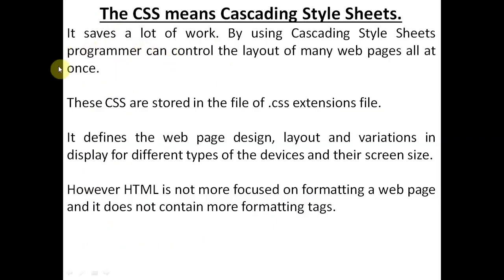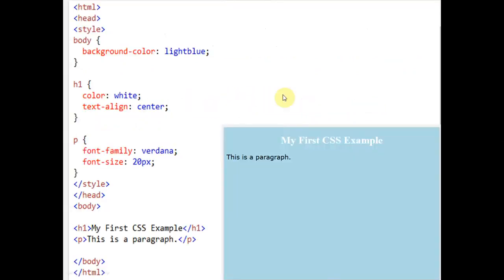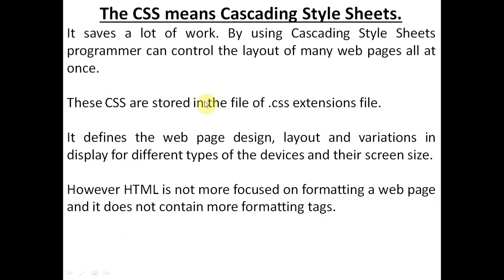These are the benefits of Cascading Style Sheet — it saves a lot of work, and a programmer can control the layout of many web pages all at once. CSS files are stored with a .css extension in the case of an external CSS file. But in this program, we have an internal CSS file — we are writing the CSS inside the head portion. We can also store it in a different file, which is then called an external CSS file with a .css extension.